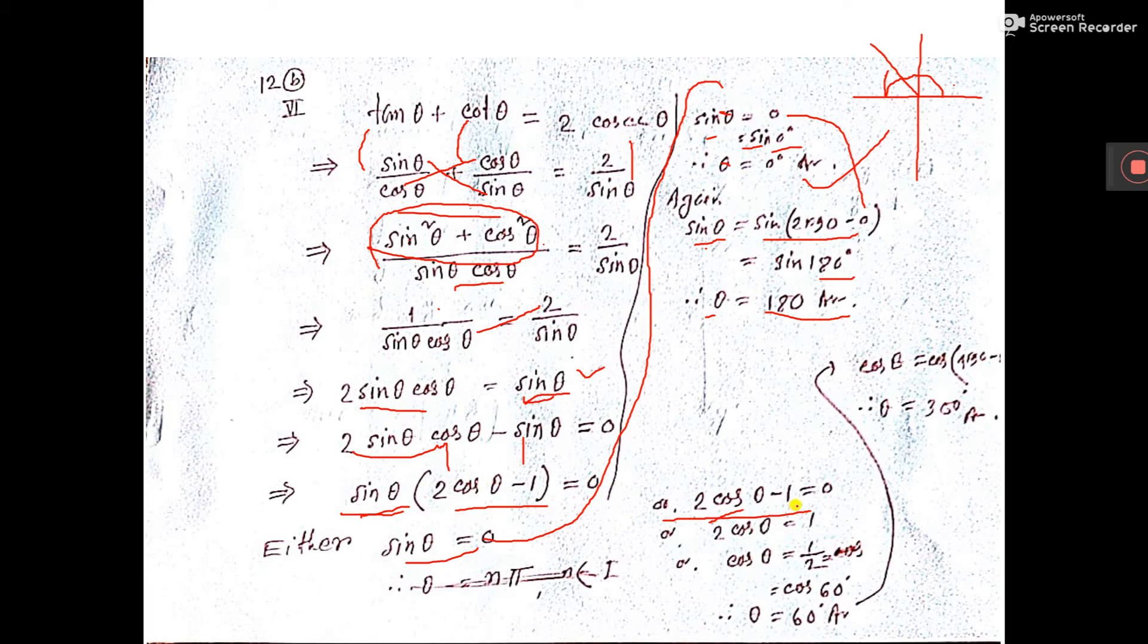Now let us take this one. 1 you send right side, 2 you send right side. So cos theta equal to 1 by 2. 1 by 2 means cos 60 degree. So theta is equal to 60 degree.